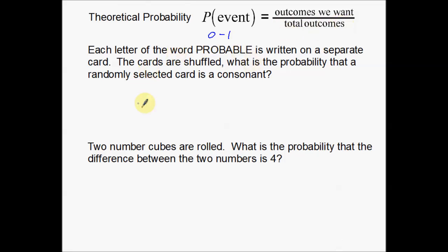We're going to look at a couple of examples to get a better idea of what theoretical probability is. Each letter of the word PROBABLE is written on a separate card. The cards are shuffled. What is the probability that a randomly selected card is a consonant?